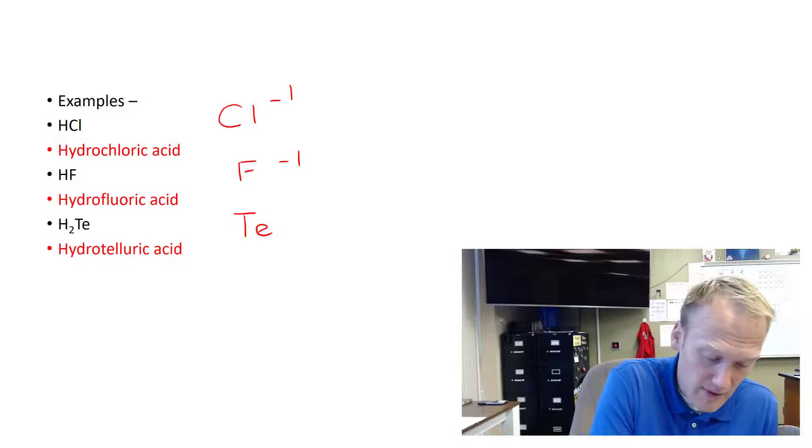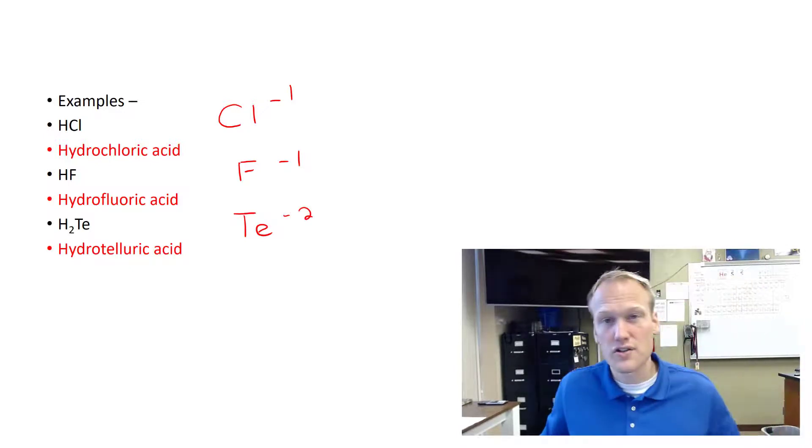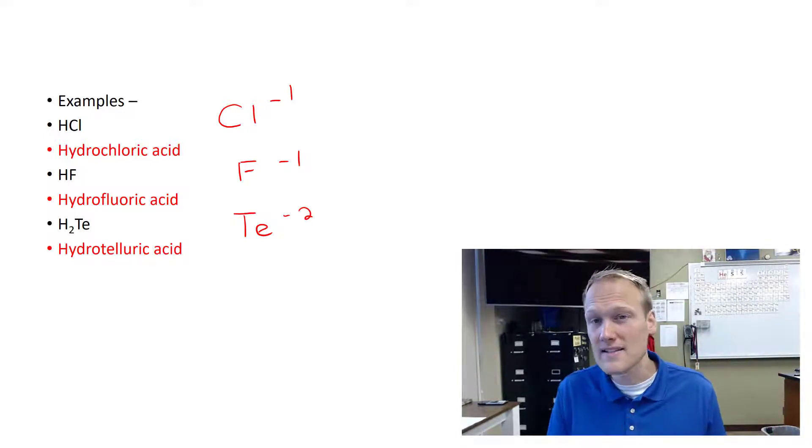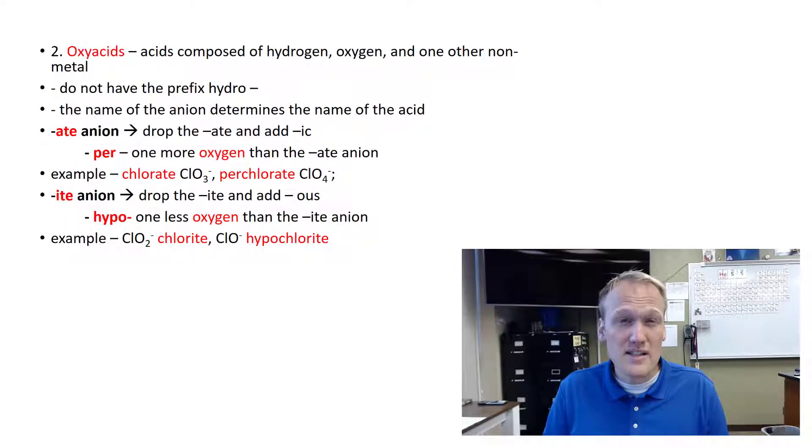it is in the oxygen family and it has a negative two charge. So you still need to balance this out like it's an ionic compound, and that's why we need the two hydrogens to balance out the charge of tellurium. But the naming is the same: hydro prefix, anion with IC at the end, and then acid. So the binary acids are pretty simple to name.